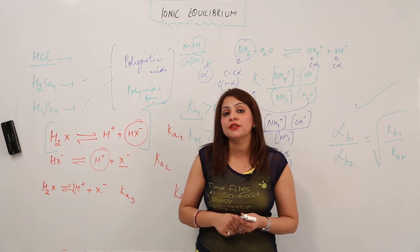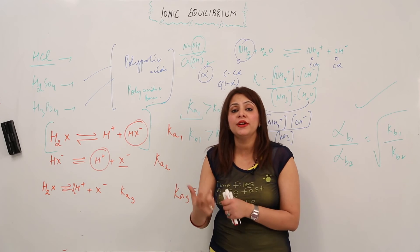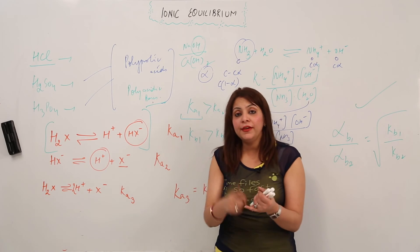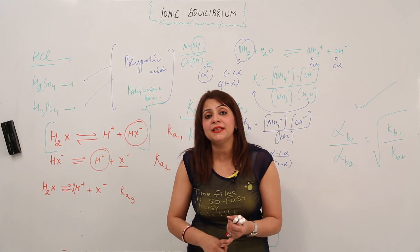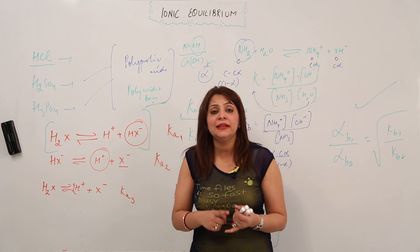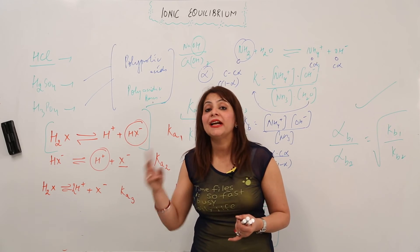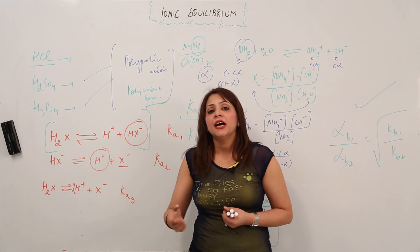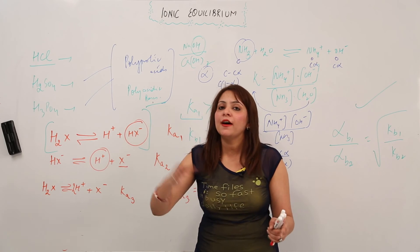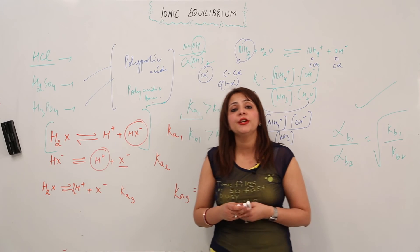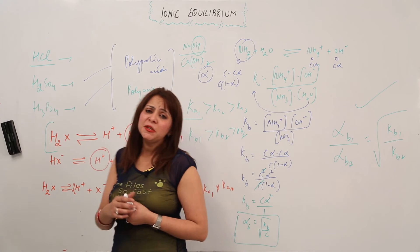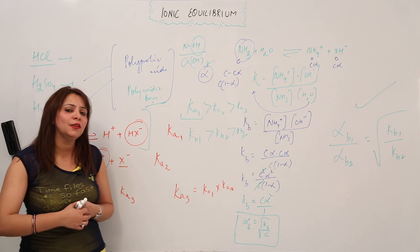Recalling the Brønsted-Lowry concept: a proton donor is an acid and a proton acceptor is a base. Keep in mind that a strong acid has a weak conjugate base, and a strong base has a weak conjugate acid — and vice versa. This is how you compare the strengths of conjugate acid-base pairs.